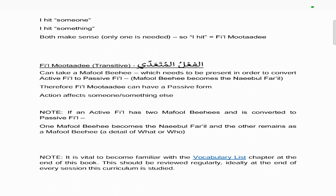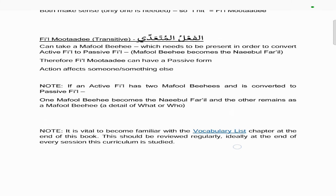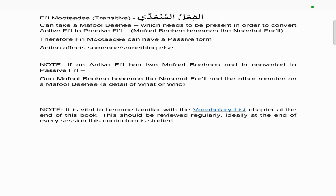The second example is 'I hit,' which is again a past tense fi'l. We test it: 'I hit someone,' 'I hit something' — both make sense, though only one is needed for the check. So 'I hit' is a fi'l muta'addi, meaning it can take a passive version. That's why 'I hit' means we know who the doer is, but 'I was hit' means we don't know who the doer is — and that is the passive version.